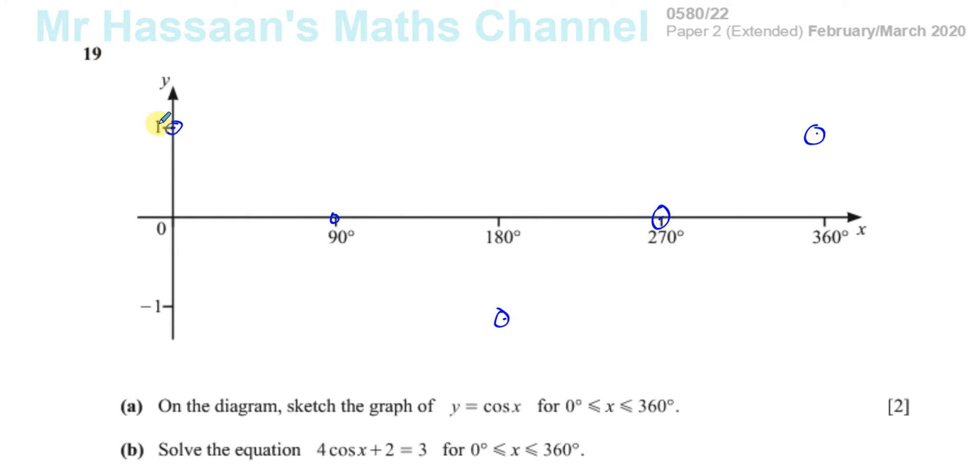And then we can draw our sketch. Now the sketch has to be a curve shape like this. It goes down like this, goes through. You have to be careful not to make silly mistakes. You have to be careful to make it a smooth curve.